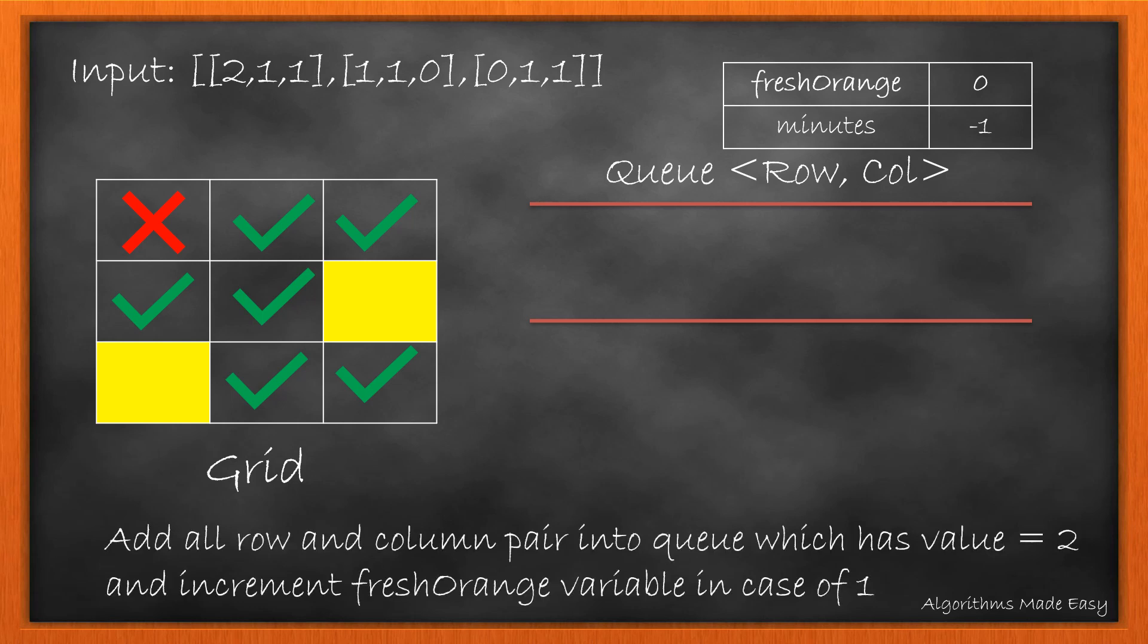We first need to know the number of fresh oranges and also the index of all the rotten ones. So we will loop on the grid and increment fresh orange when the value is 1, and add the pair of row and column into the queue when the value is 2. This gives us fresh orange as 6 and the index of the rotten into the queue.